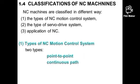Classifications of NC machines. NC machines are classified in different ways: by the type of NC machines, NC motion control system, type of servo drive system, and application of NC. Type of NC motion control system has two types: point-to-point and continuous path.